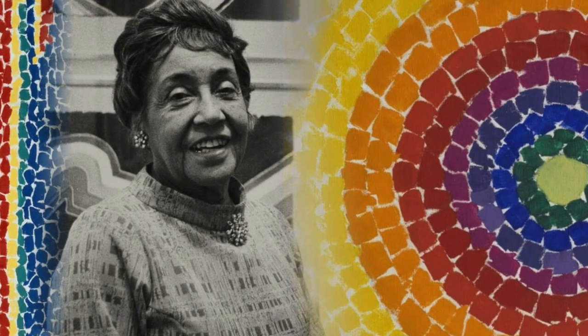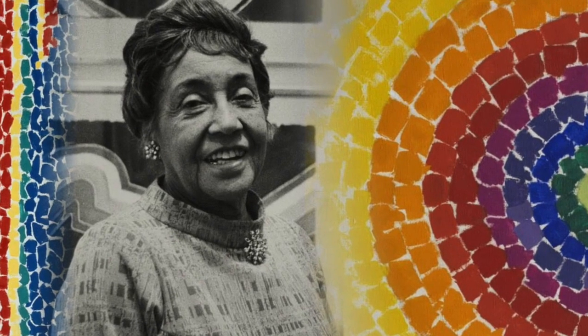Alma Woodsy Thomas was born in rural Georgia in the late 19th century. As a young girl, she moved to Washington, D.C., the city where she would spend the rest of her life as an artist and a teacher, creating famous paintings just like these ones with lots of color and abstract shapes.